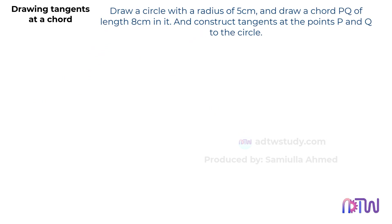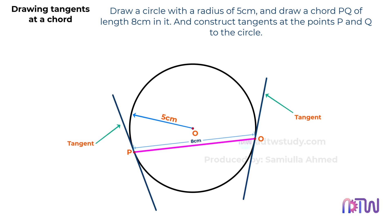According to the given instructions, we need to draw a circle of radius 5 centimeters. After that, we have to construct a chord PQ of length 8 centimeters. In the end, we have to construct the tangents at the endpoints of the chord.